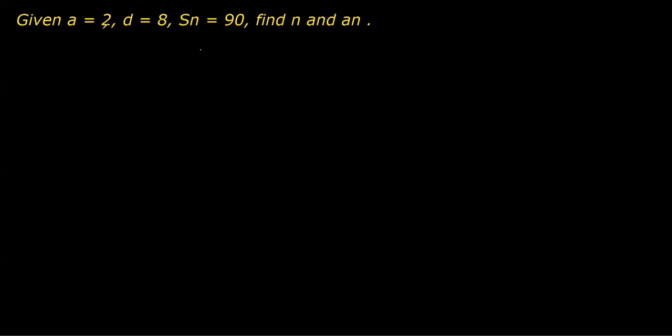In this question from the chapter arithmetic progression, we have first term as a = 2, the common difference d = 8, and the sum of first n terms is given as 90. We have to get the value of n and an.